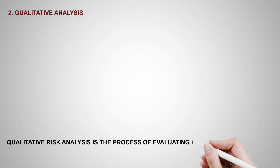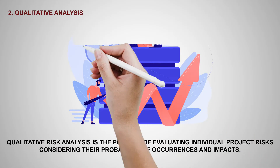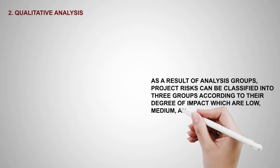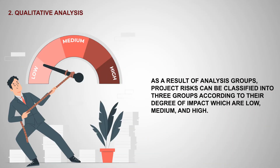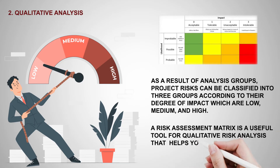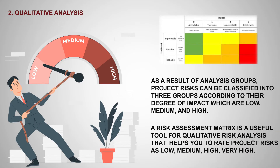Step 2: Qualitative Analysis. Qualitative Risk Analysis is the process of evaluating individual project risks considering their probability of occurrences and impacts. As a result of analysis, project risks can be classified into three groups according to their degree of impact, which are low, medium, and high. A risk assessment matrix is a useful tool for qualitative risk analysis that helps you to rate project risks as low, medium, high, or very high.